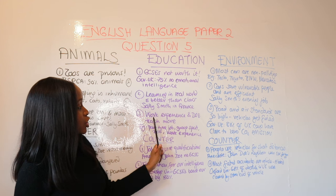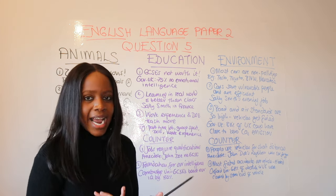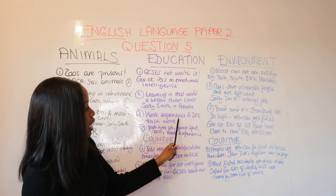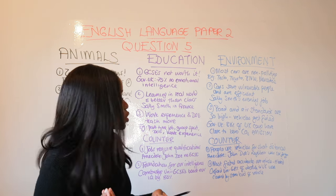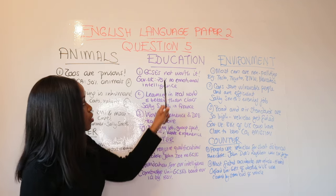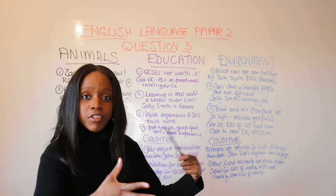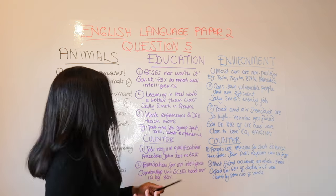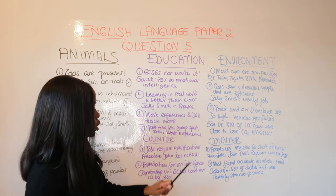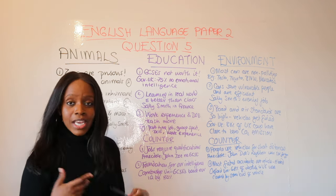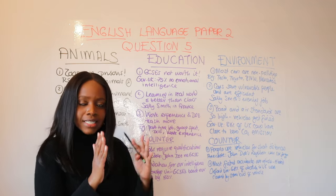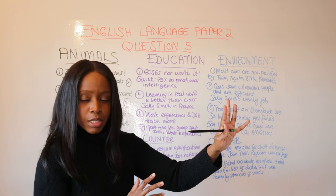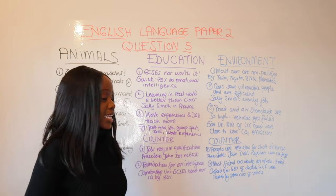The third reason is that education doesn't give you work experience. Learning in the classroom doesn't put you out into the real world. Things like getting a part-time job, doing the Duke of Edinburgh award, and getting work experience actually teach you more than the classroom. Use examples: part-time jobs, group sports, Duke of Edinburgh, and work experience — all of these make people more valuable to society.